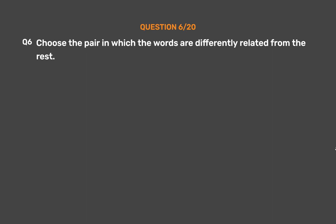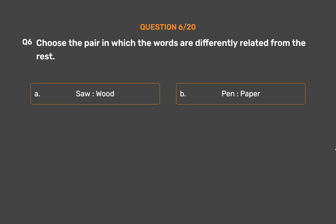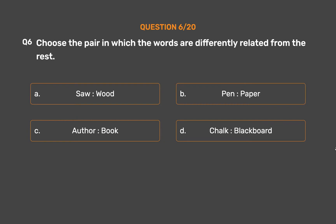Question number 6. Choose the pair in which the words are differently related from the rest. Option A: Saw, Wood. Option B: Pen, Paper. Option C: Author, Book. Option D: Chalk, Blackboard.